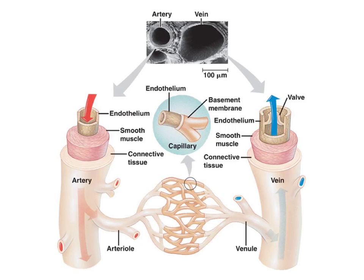Here is the smooth muscle. When it contracts, the inside diameter of the artery gets smaller, which would cause blood pressure to go up. And when it relaxes, the inside diameter of the blood vessel gets bigger, which means that the blood pressure would go down. So the arteries have, to some extent, the capacity to change blood pressure and make it higher or lower as needed by the body.